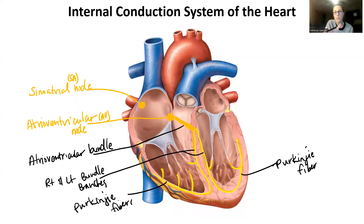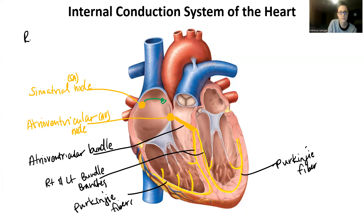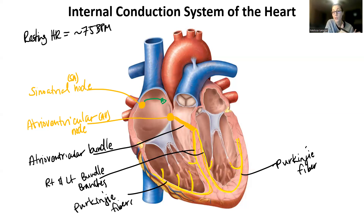Now let's consider how the internal conduction system depolarizing maps onto blood flow. The sinoatrial node is considered the actual pacemaker of the heart — it ensures you have a resting heartbeat. Resting heart rate is usually about 75 beats per minute, meaning you're completing one cardiac cycle in less than one second. What creates this 75 beats per minute is the internal conduction system.